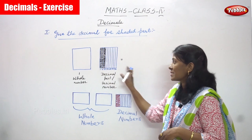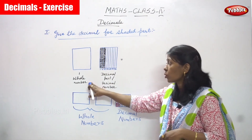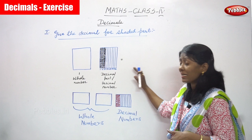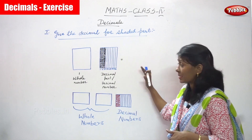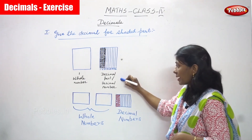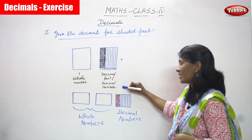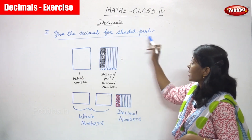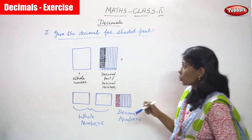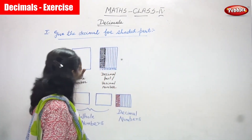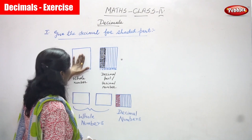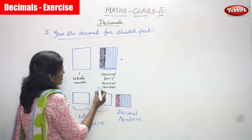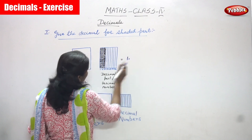This is one box, and this is another box. The first one is a whole number. Next, I segregate it into 10 divisions, or 10 parts — so this is the decimal part, otherwise we can call it a decimal number. Give the decimal for shaded parts. This is one whole part, and we have to add it with the decimal part. So the answer is one point...